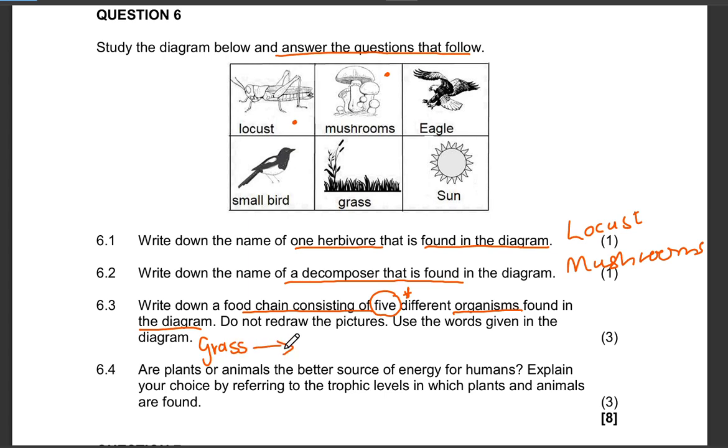We can start by having the grass as our producer. Remember you then write down your arrow indicating the flow of energy. So that will be the grass, then we may have the locust feeding on the grass, then we may have the bird, small bird, then the eagle, then obviously the decomposer which is mushroom.